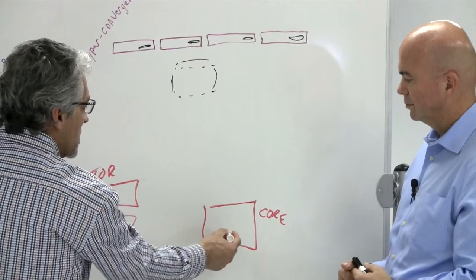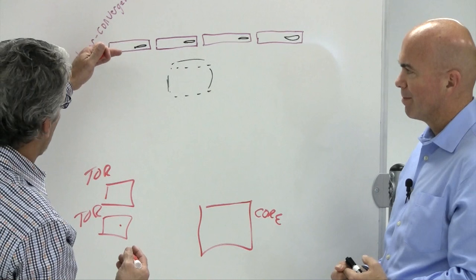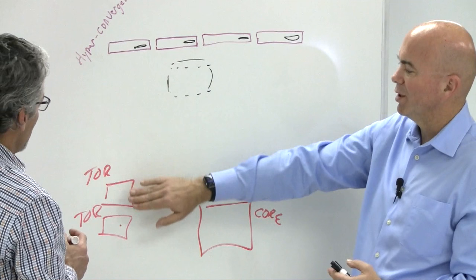But ultimately, the top of rack switches have to talk to the core with the 40 gig uplinks. And then the 10 gig connections on the top of rack switch have to talk to our nodes.